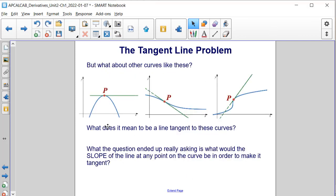But what about other curves like these? Here's our tangent in this one, here's our tangent in this one, and here's our tangent in this problem. What does it mean to be tangent to these curves? What the question ended up really asking is what would the slope of the line at any point on the curve be in order to make it tangent?